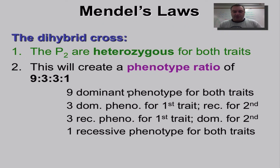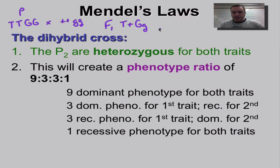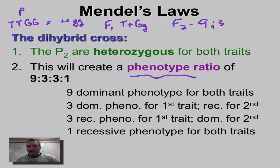In a dihybrid cross, you're going to do the same thing that Mendel did before. Your P generation would be two different purebreds crossed together. The F1s would all be hybrids — one parent gives big G, the other gives little g; one parent gives big T, the other gives little t. When you do the F2s, they come out all different things, and you're going to get a phenotype ratio of 9 to 3 to 3 to 1.